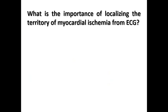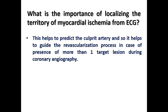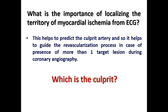The first question we need to ask ourselves: what is the importance of localizing the territory of myocardial ischemia from ECG? Anyway, we are going to have invasive coronary angiography to arrange for coronary revascularization. It is very important to predict the culprit artery because it helps to guide the revascularization process in case of more than one target lesion during coronary angiography. So localization helps you to answer: which is the culprit vessel — is it the LAD, LCX, or RCA?